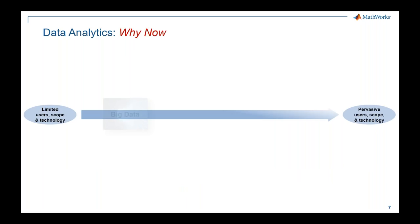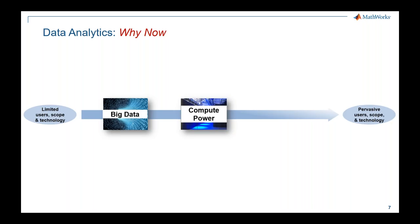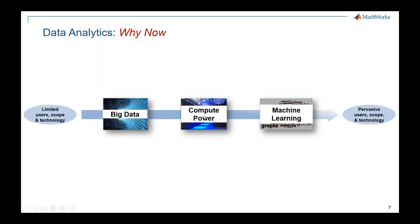Let's look at why everyone is talking about analytics now. There are three strong reasons. First, we now have access to enormous amounts of data — both business and engineering data. Second, we have enough compute power: desktop cores, mobile processors with eight cores, GPUs, clusters, cloud, and Hadoop. Third, machine learning algorithms — these are not new, but they're now being used together with big data and compute power to build algorithms. These are the three pillars or building blocks of data analytics.